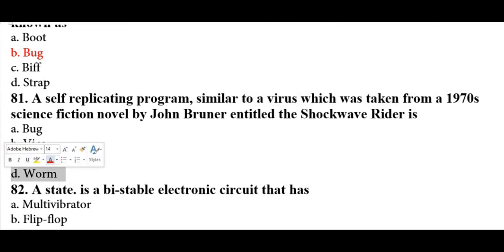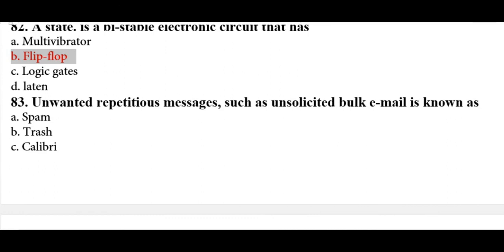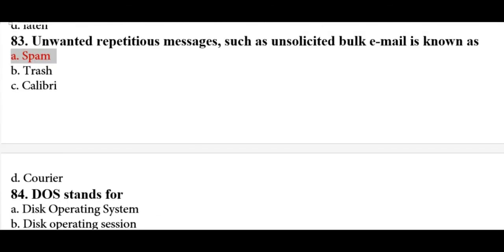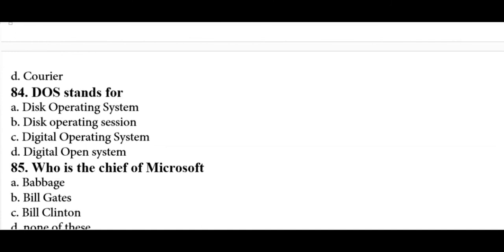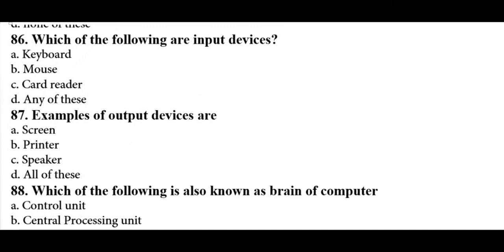A fault in a computer program which prevents it from working correctly is called a bug — a jargon term for glitch. A self-replicating program similar to a virus — referenced from a 1970s fiction novel by John Brunner entitled 'The Shockwave Rider' — is called a worm, not a bug. A bi-stable electronic circuit is called a flip-flop.